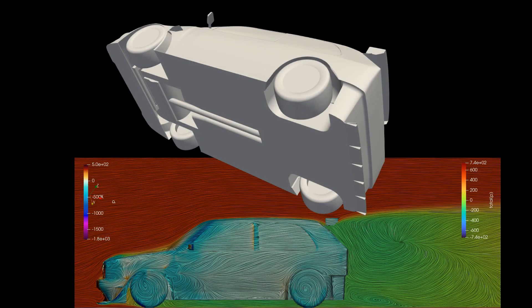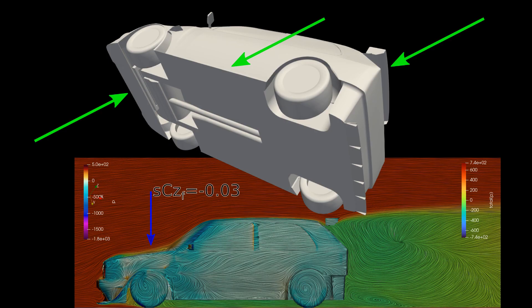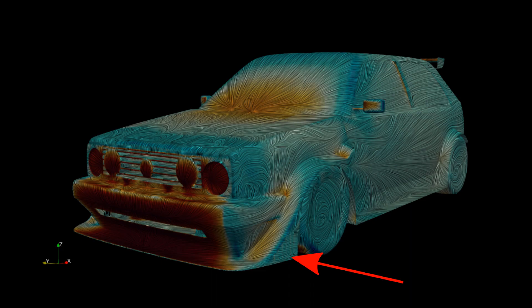Adding the usual front splitter, skirts, and rear spoiler, gave a marginal amount of downforce. Like an SCZ of negative 0.03. Adding vents in front of the wheels started to see something resembling useful downforce, an SCZ of negative 0.12. But that's just 50% of the easily achievable rear downforce.